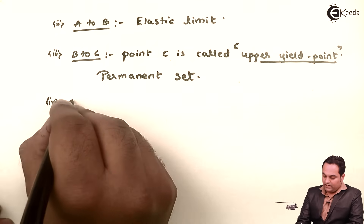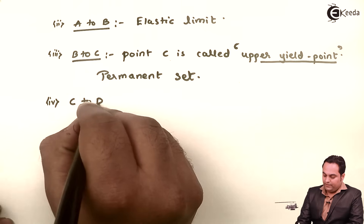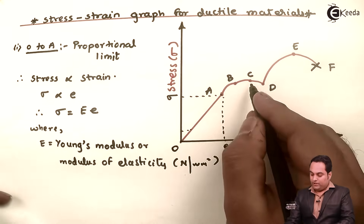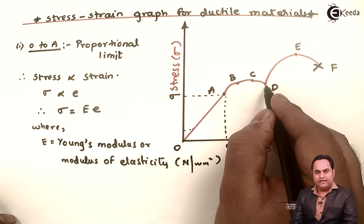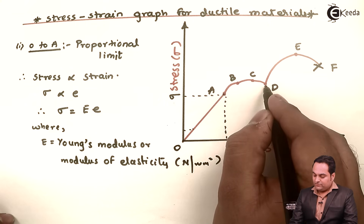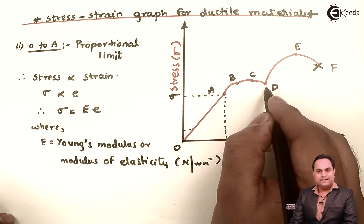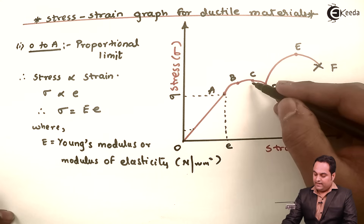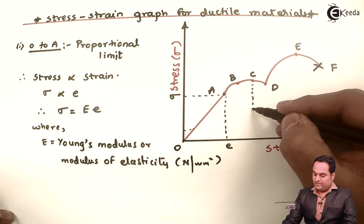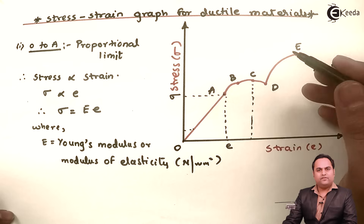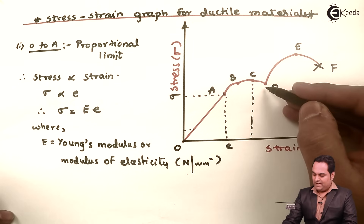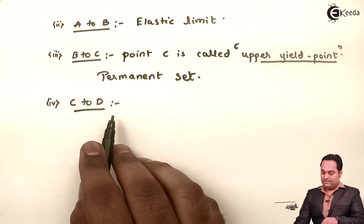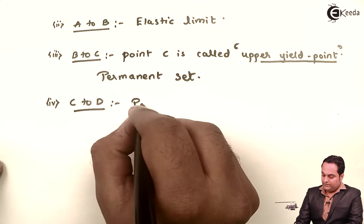From region C to D, as we can see in the diagram, point D is below point C, meaning the stress at point D is less compared to point C. But the material is deforming more — at point C the strain is less, and at point D the strain is more but stress value is less.